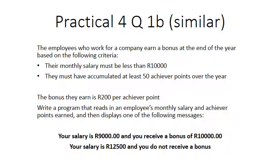The question states that employees who work for a company earn a bonus at the end of the year based on the following criteria: the monthly salary must be less than 10,000, and they must have accumulated at least 50 achiever points over the year. The bonus they earn is 200 Rand per achiever point.